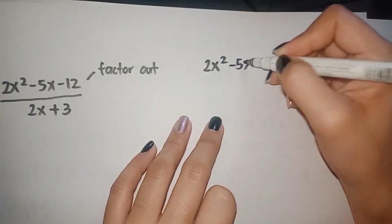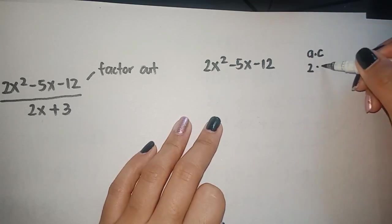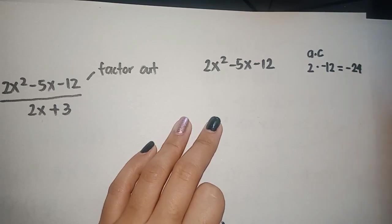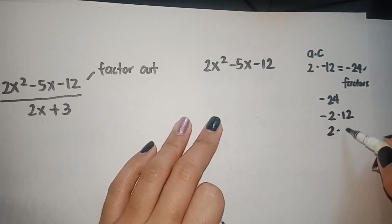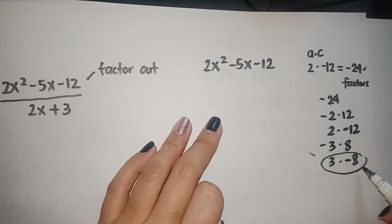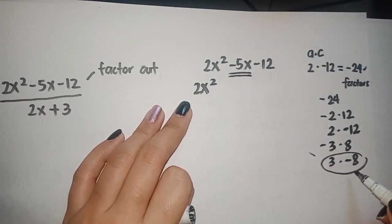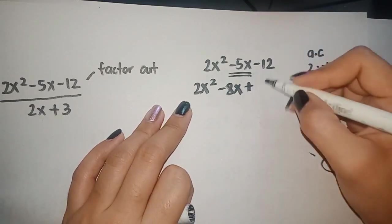Now in this case, our numerator is a trinomial in the form of ax squared plus bx plus c. So the first thing that you should do to factor this one out is to multiply the numerical coefficient of a and c. So that is negative 24. Now we have to look for the factors of negative 24 wherein its sum should result with the middle term, which is negative 5. The factors that we are looking for is positive 3 and negative 8. The next step is to expand negative 5x using the factors.